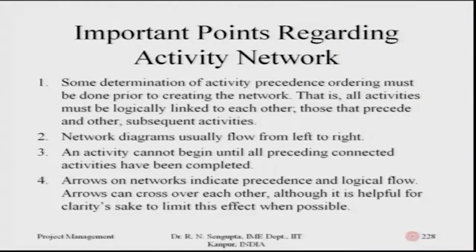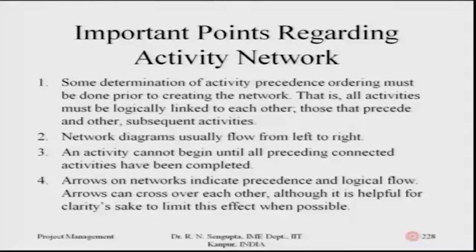The network diagram usually forms from the left to the right. If you remember the decision tree diagram, on the left we had the start of the total decision process, and on the right was the end. An activity cannot begin until all preceding connected activities have been completed, which is very important to know. Arrows on the network indicate precedence and logical flows. Arrows can cross each other, although it is helpful for clarity to limit this effect when possible, because criss-crossing would make it much more confusing.